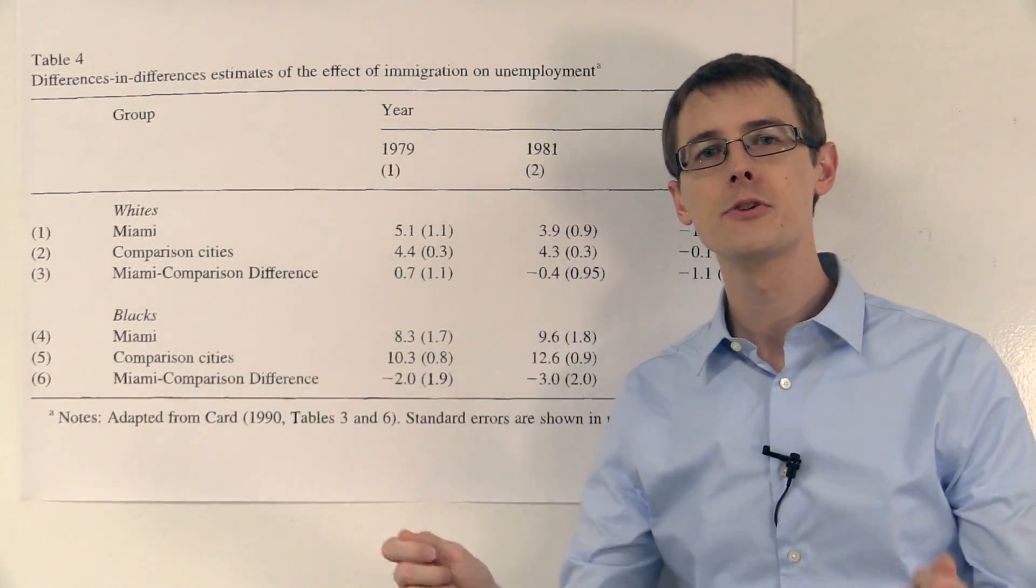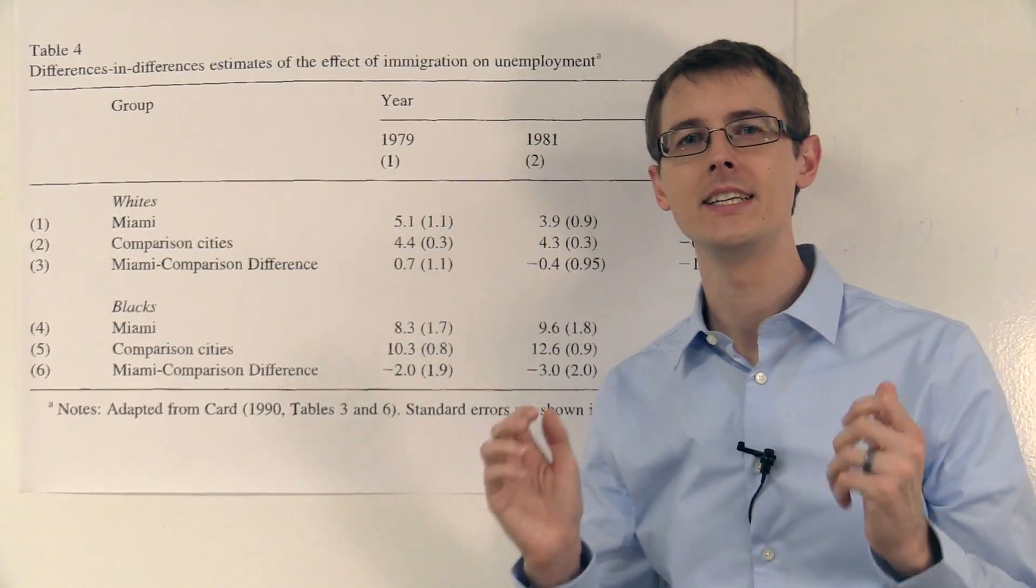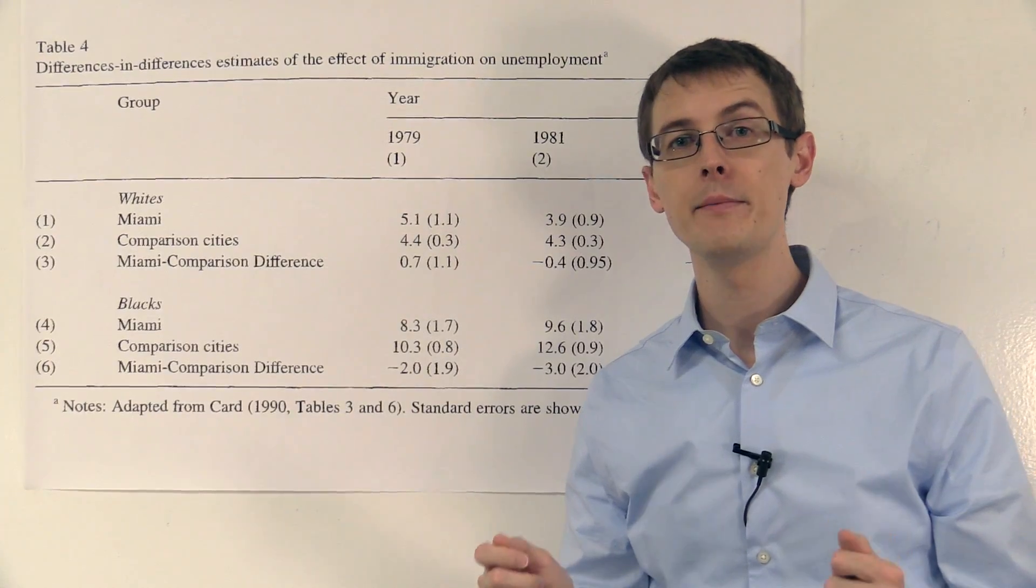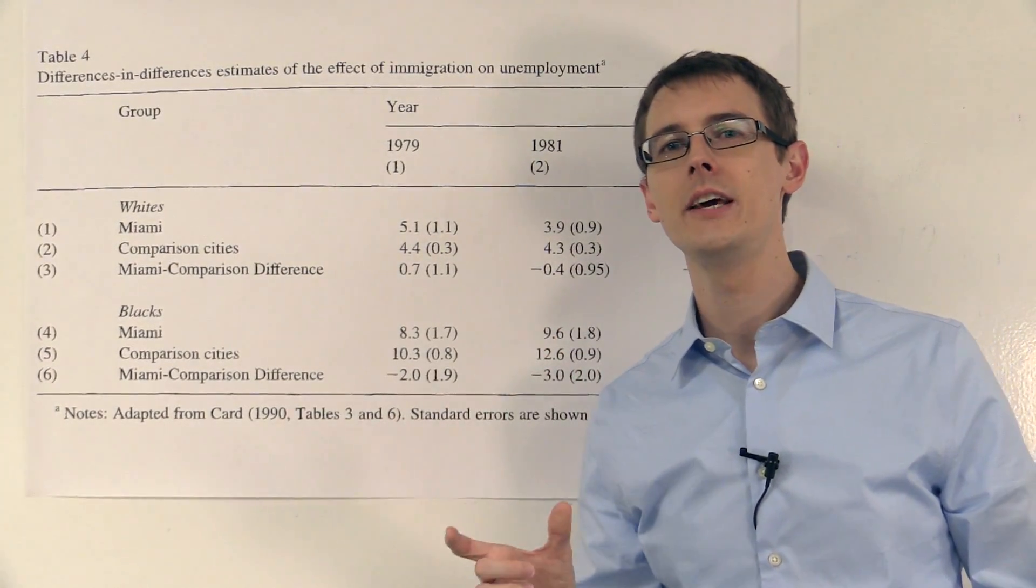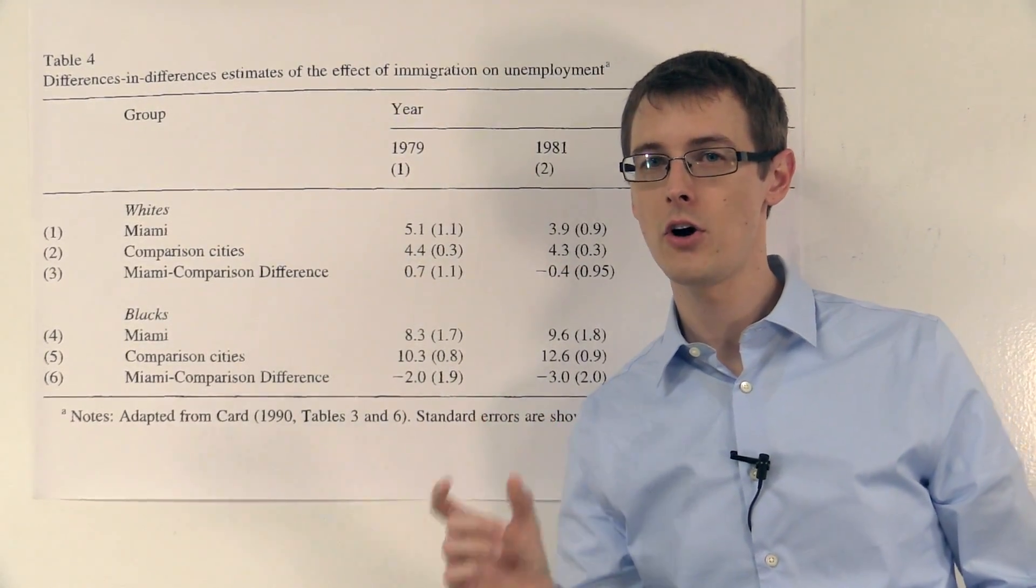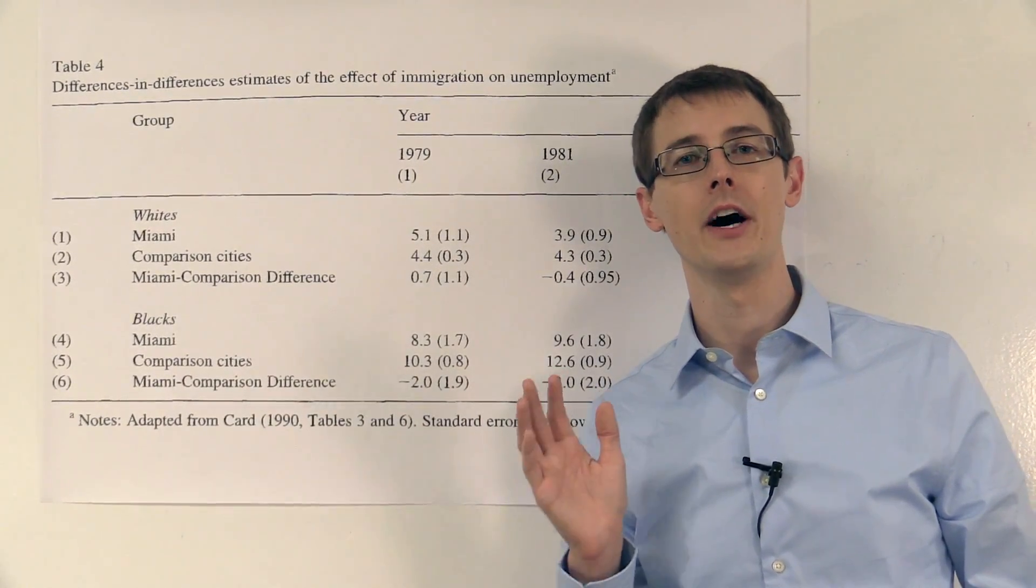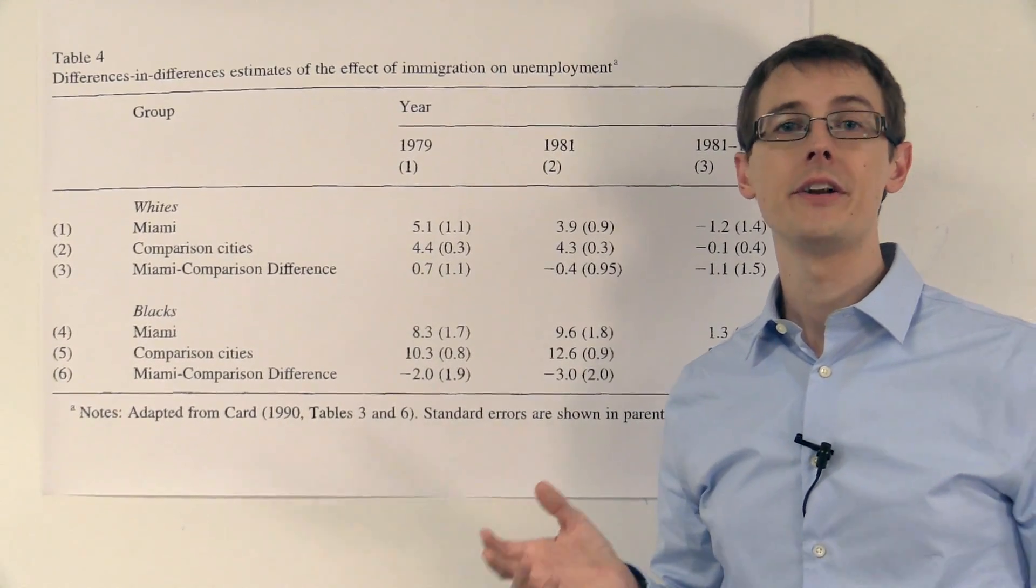So we can't really attribute this decrease and this increase solely to the change in immigration between '79 and 1981. What are we going to do? Here's where we use the difference in differences idea. We make the common trends assumption and we extract out this common trend. And then that's going to leave us with an estimate of the causal effect of immigration on the unemployment rate.